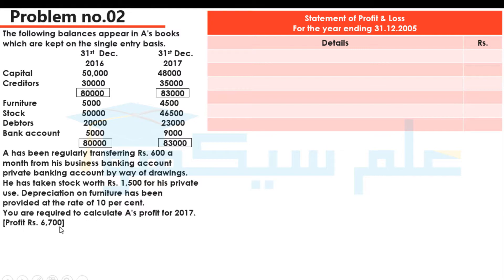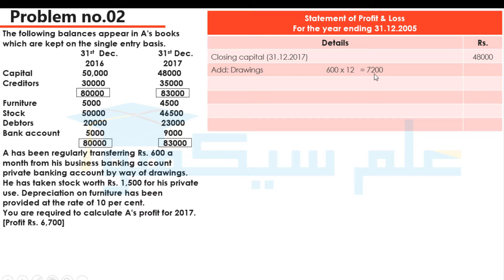The profit is Rs. 6,700. We have to write a statement of profit and loss for the year as of 31 December 2017. First we will write closing capital as of 31 December 2017: Rs. 48,000. We will add drawings. Drawings are Rs. 600 per month, so we will write drawings 600 into 12 to get the whole year's drawings. There is also stock used for private use, which will also come to drawings.